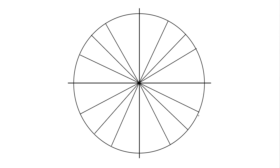Now we need to figure out what the angles are and what the points are for each of these angles. Let's go ahead and throw in those angles. If we've rotated none at all from the x-axis, we have an angle of zero radians. On the very top of the circle, our angle is pi over 2.